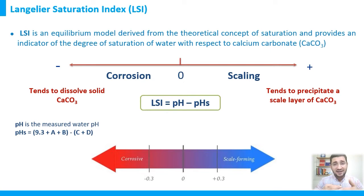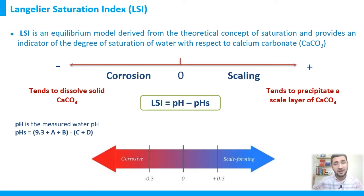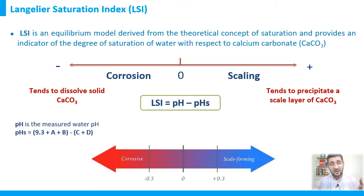LSI is a unitless value that can be positive or negative, ranging from zero toward positive or negative values. When the LSI goes from zero toward positive values — 0.1, 0.5, 1, 1.5, 2, and so on — there is a gradual increase in scaling tendency. That water has a high saturation level of calcium carbonate and a high tendency to precipitate calcium carbonate.